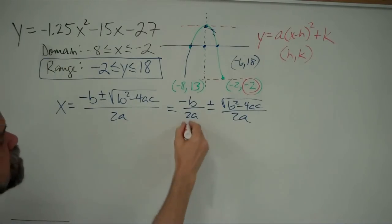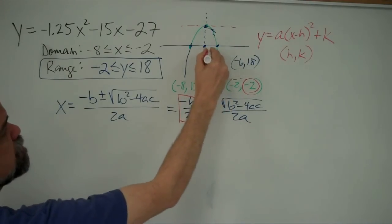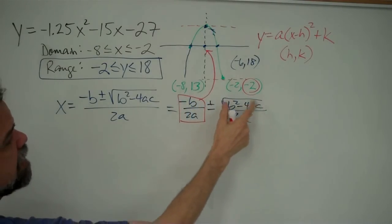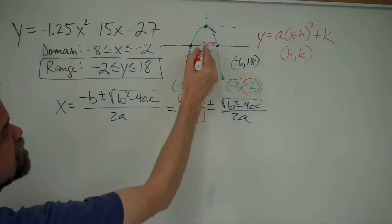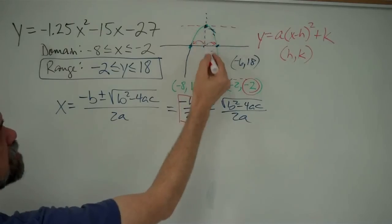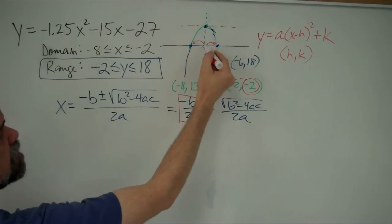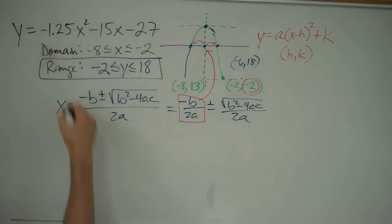Well, this negative b over 2a, that corresponds to this point here. And when you add this piece here, you get that point. And when you subtract this piece here, you get that point. And all this is to say, if what you're looking for is the vertex, it's going to have the same x-coordinate as this point right under it, which is negative b over 2a.